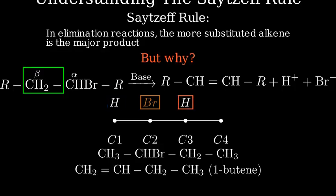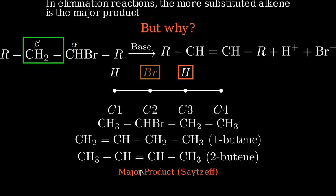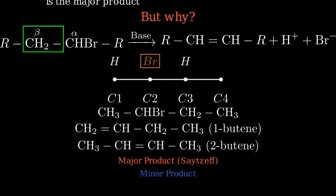Option two: the hydrogen on carbon three, which would give us 2-butene. According to the Zaitsev rule, 2-butene should be the major product because it has the more substituted double bond, with two methyl groups attached, instead of just one.